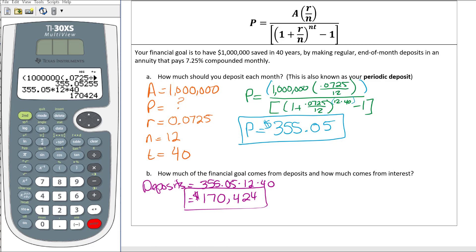But now I'm finding the interest. The interest is A minus the deposits, and the deposits are P times n times t, which we've actually already figured out. So I'm going to take 1 million minus my $170,424.